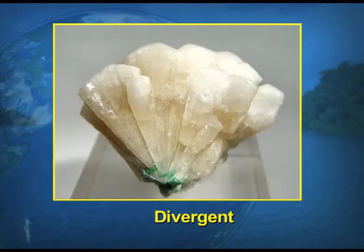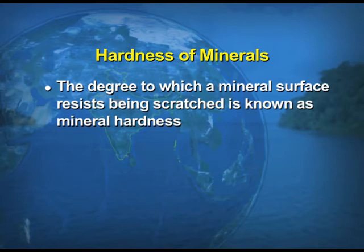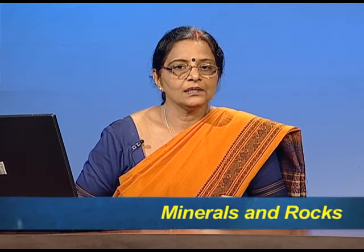The divergent structure is when the arrangement comes from the sides toward the center. The next physical property is hardness — the resistance of the mineral surface to being scratched. If a mineral is soft, it can be easily scratched and eroded. If the mineral is hard, it is difficult to erode or weather.